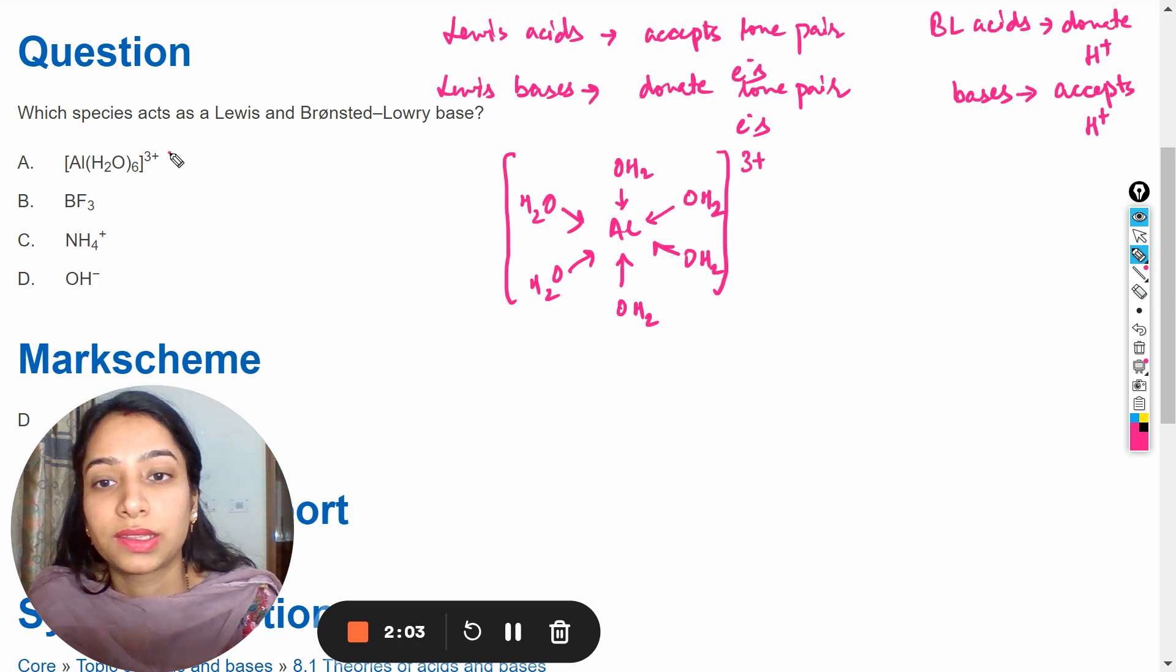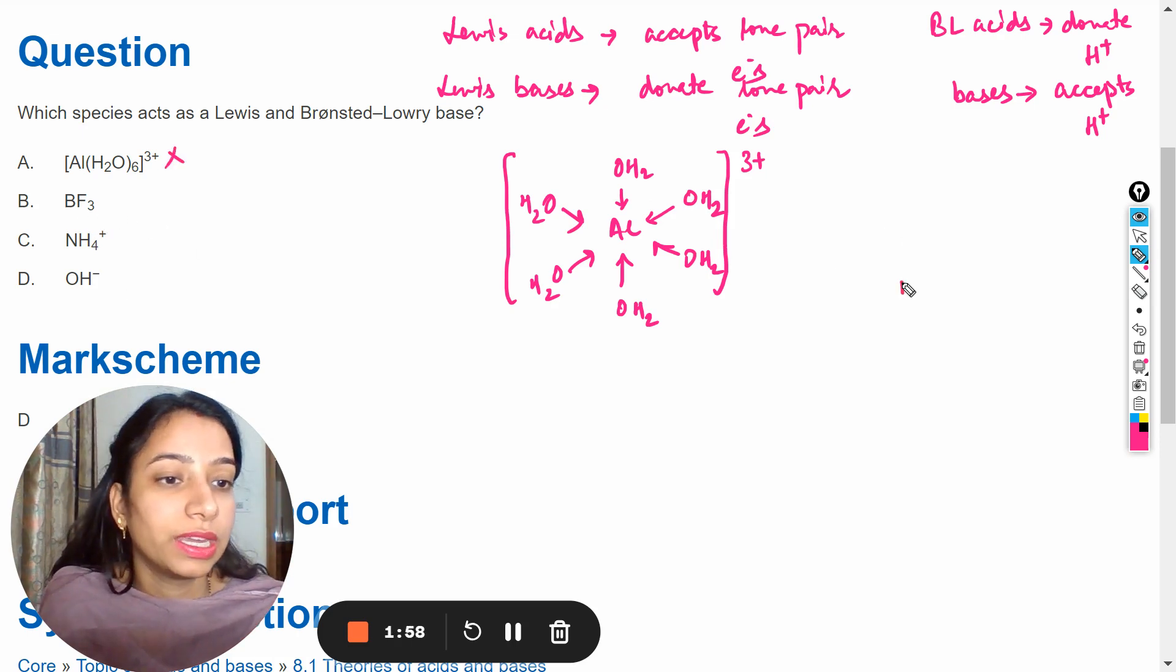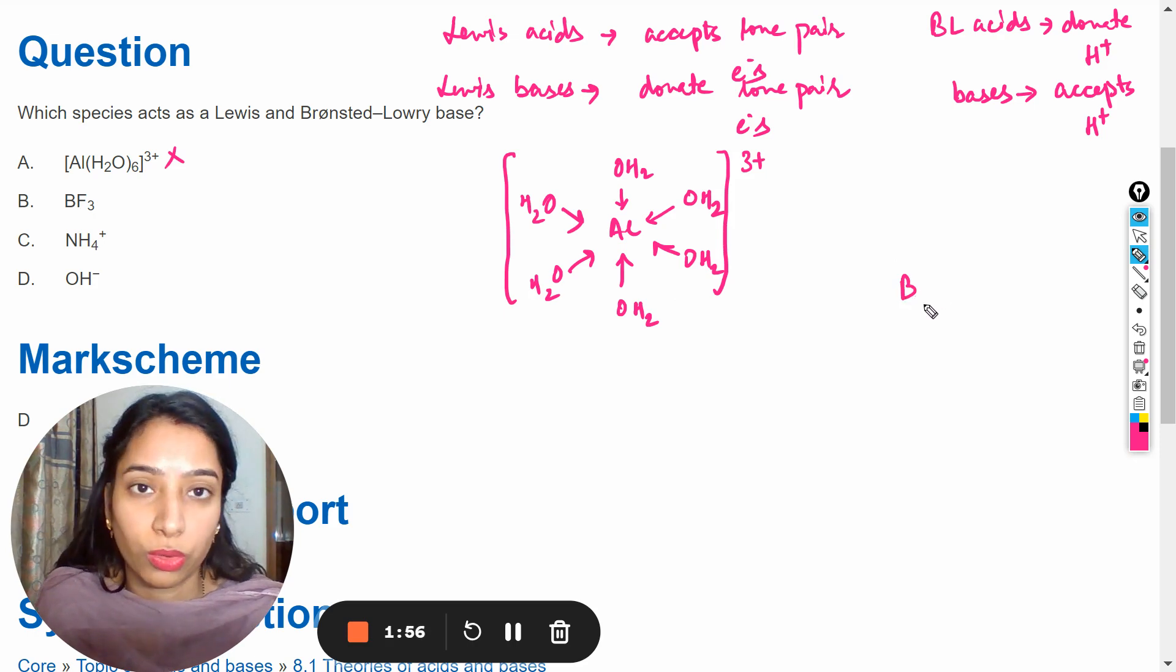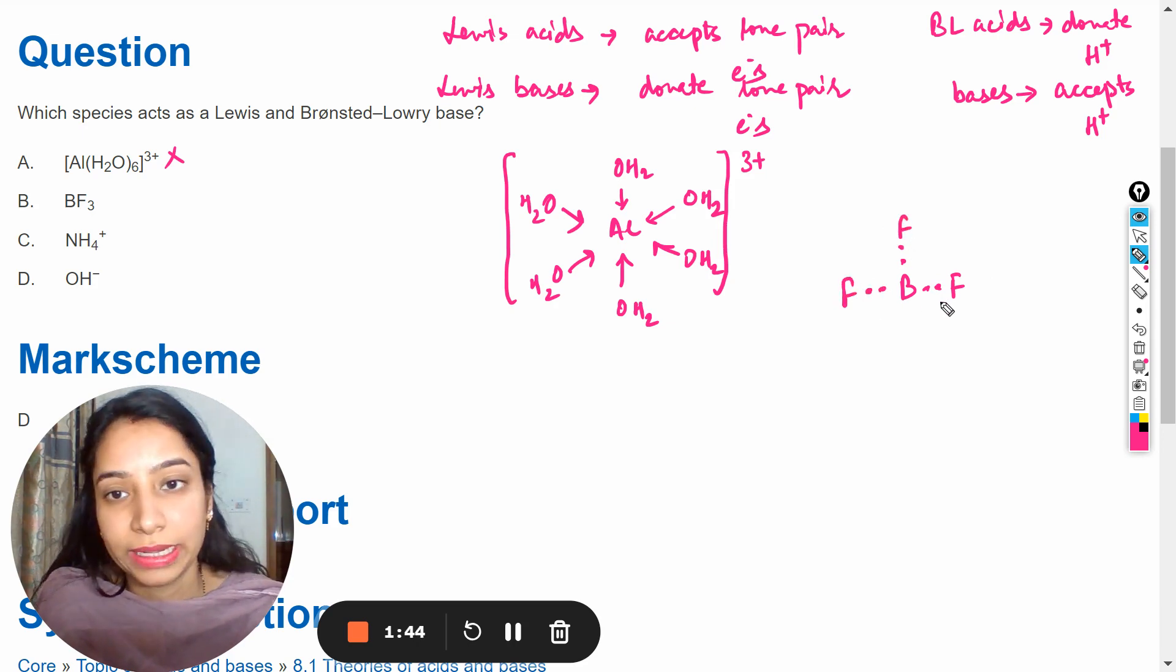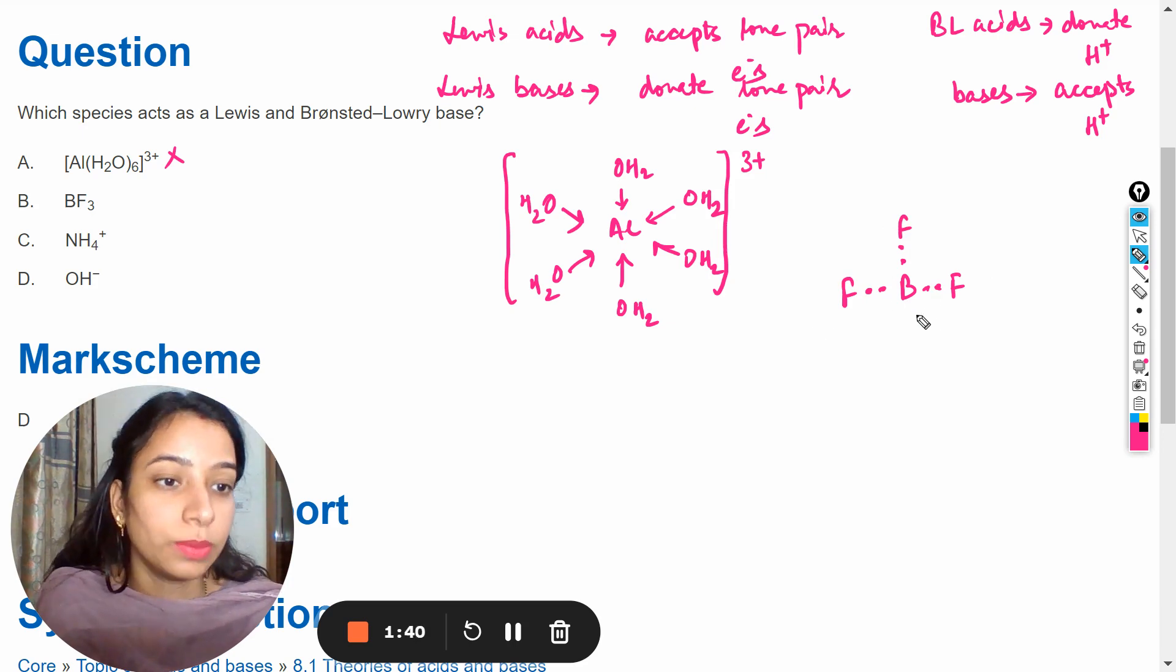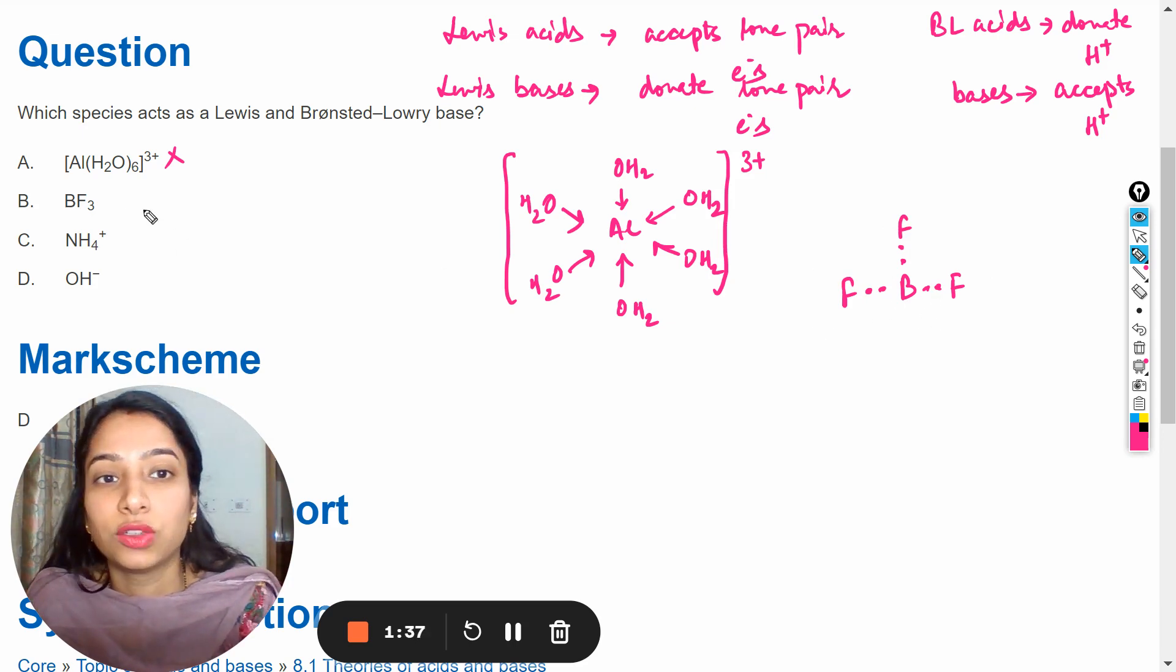Next is BF3. Again this BF3, boron has three valence electrons and it shares its each valence electron with three fluorine atoms. So it has no lone pair of electron that's why it can't act as Lewis base.